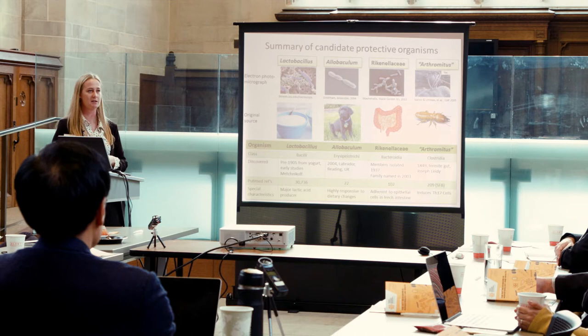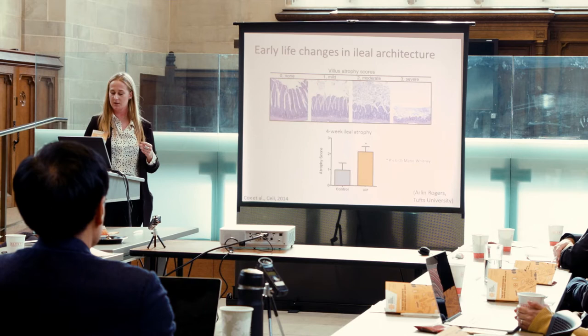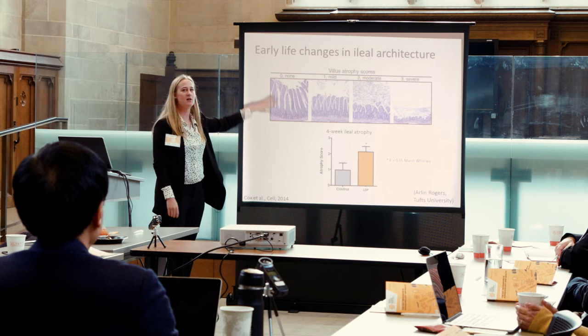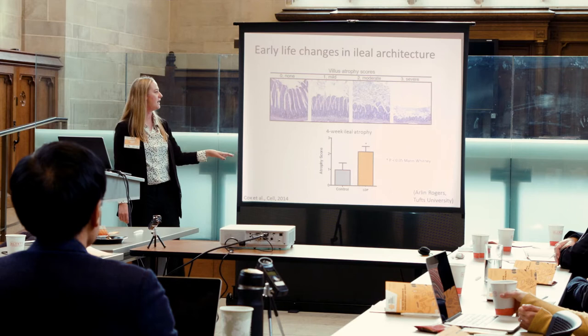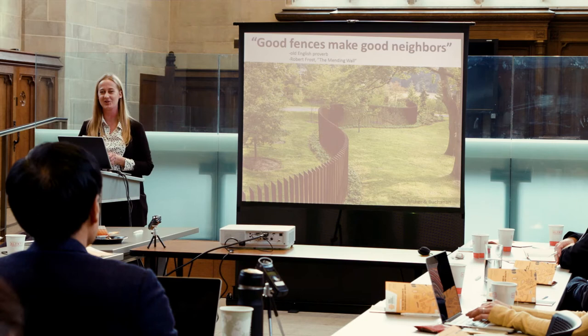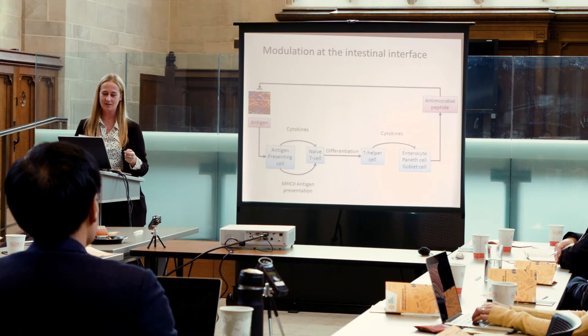We wanted to look at what was going on in the gut, so we looked by histopathology at early-life changes in ileal architecture. In the intestine you should have nice long villi, and using our scoring system we found that mice given low-dose penicillin have significantly increased villus atrophy. This brings us to the concept that good fences make good neighbors — if you want to have a lifelong relationship with your microbes, you should have appropriate defenses. We then studied further using gene expression analyses.